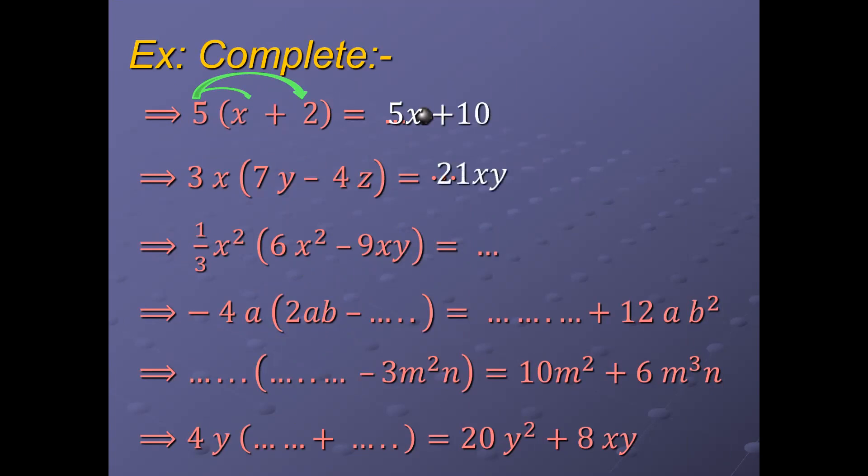Next one: 3x multiplied by 7y minus 4z. 3x times 7y equals 21xy. Then multiply 3x with negative 4z: 3 times negative 4 equals negative 12, and x times z equals xz. So the result will be 21xy minus 12xz.